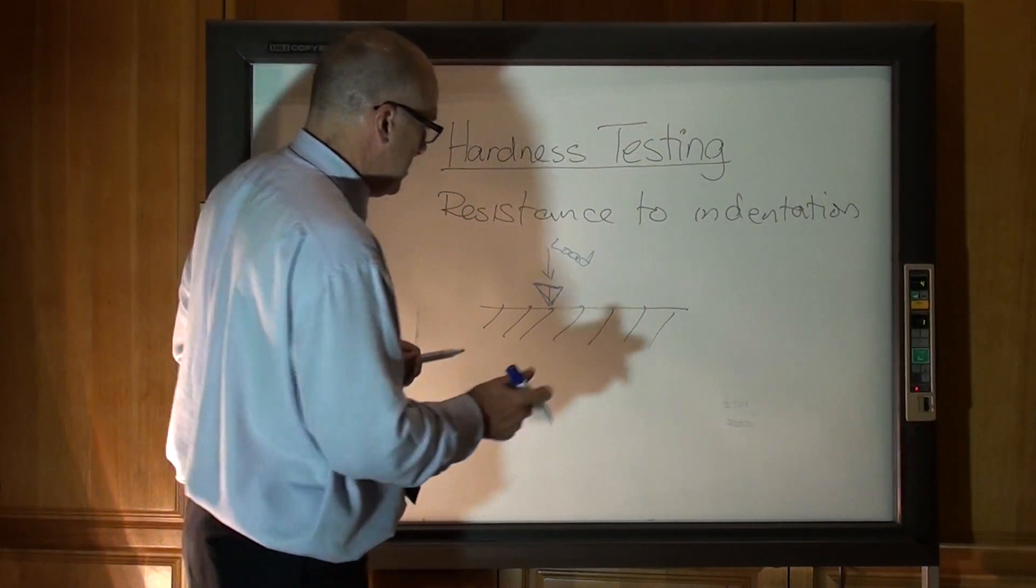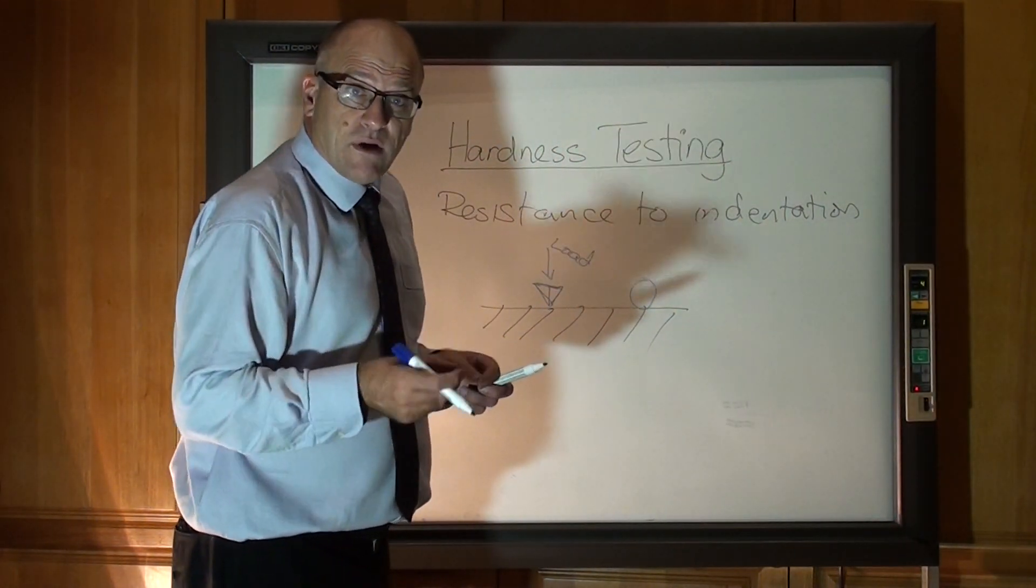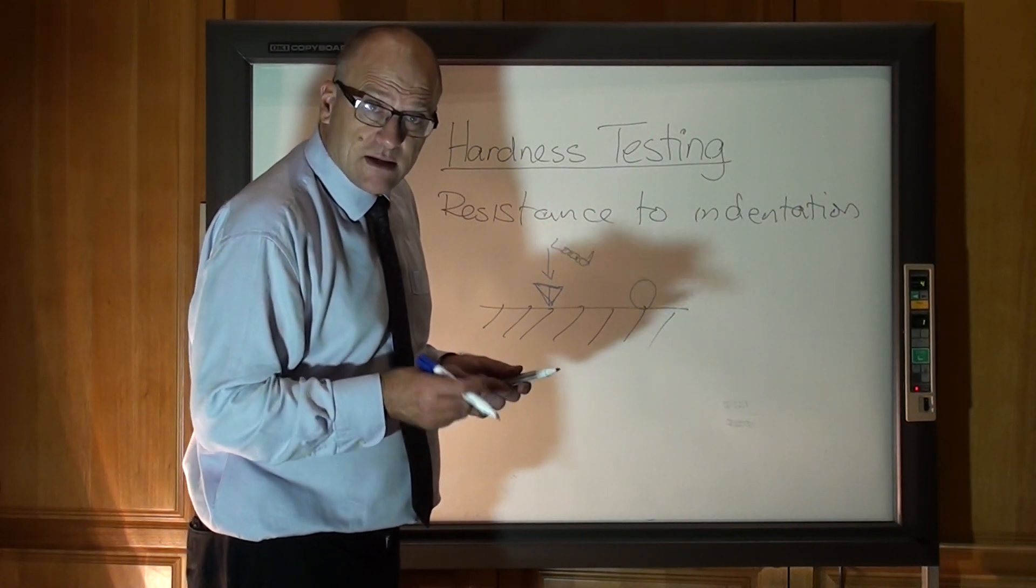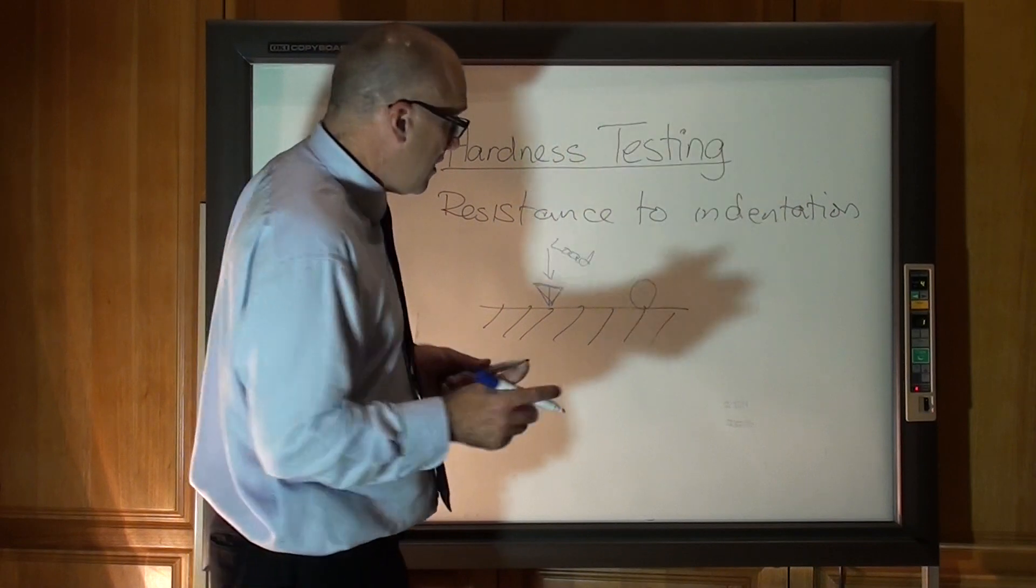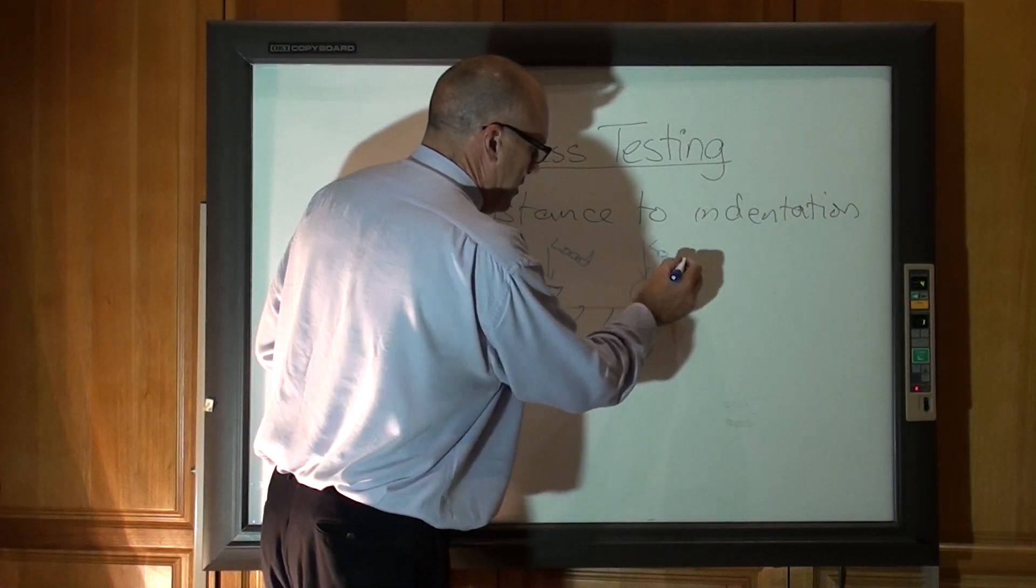That's a Knoop test. It could be a round ball. If it's around about, I think it's one sixty-fourth of an inch, because it's an American test. A tiny, tiny, tiny round ball, getting pushed in under a load.